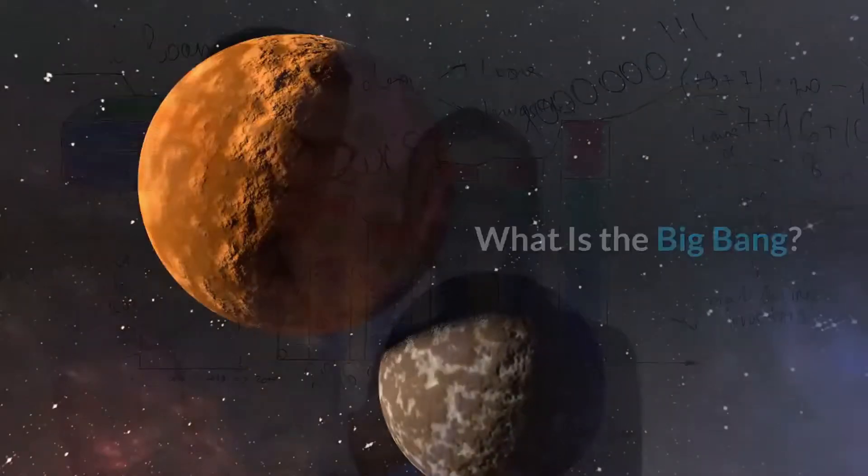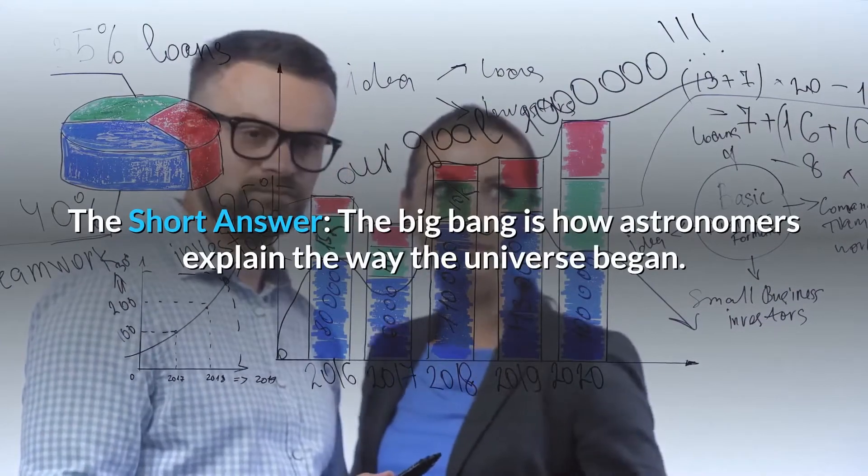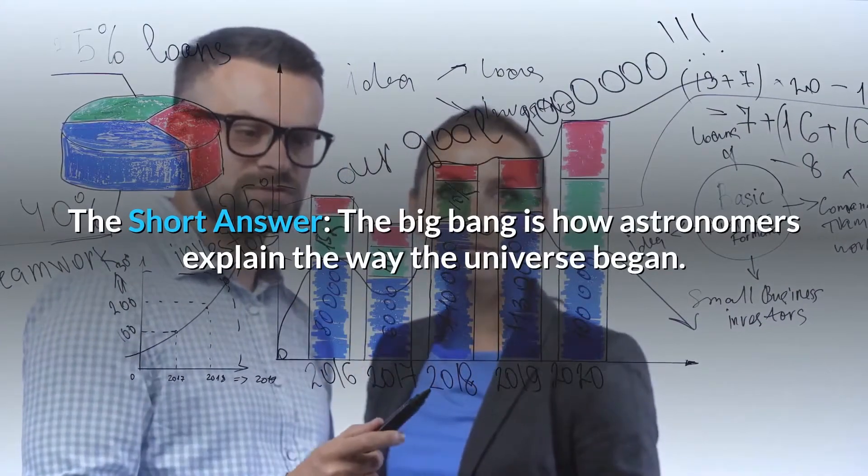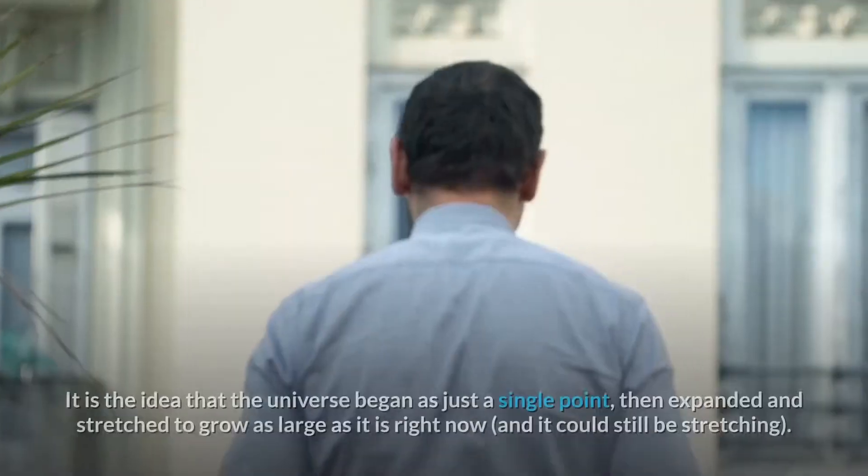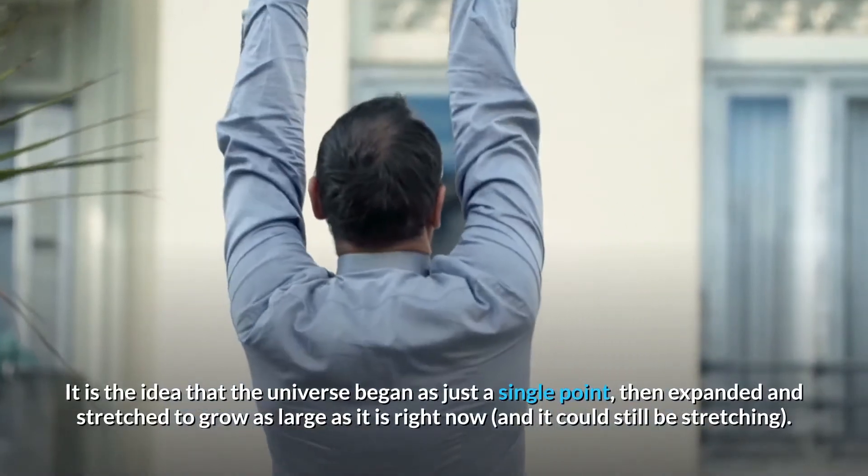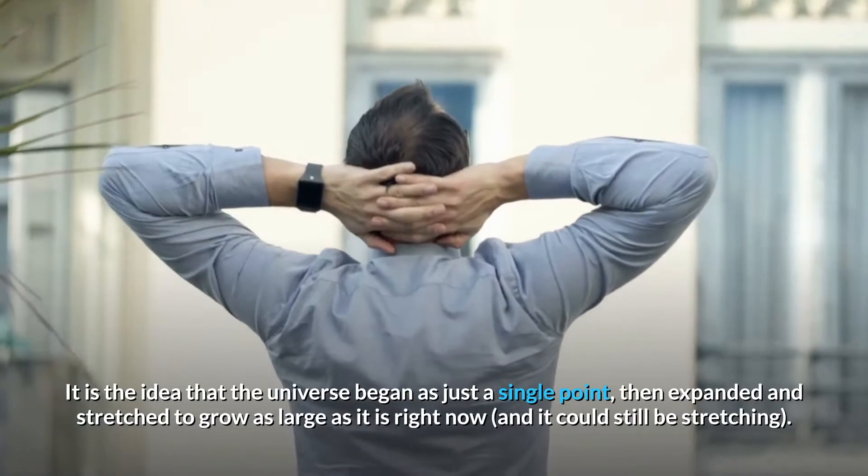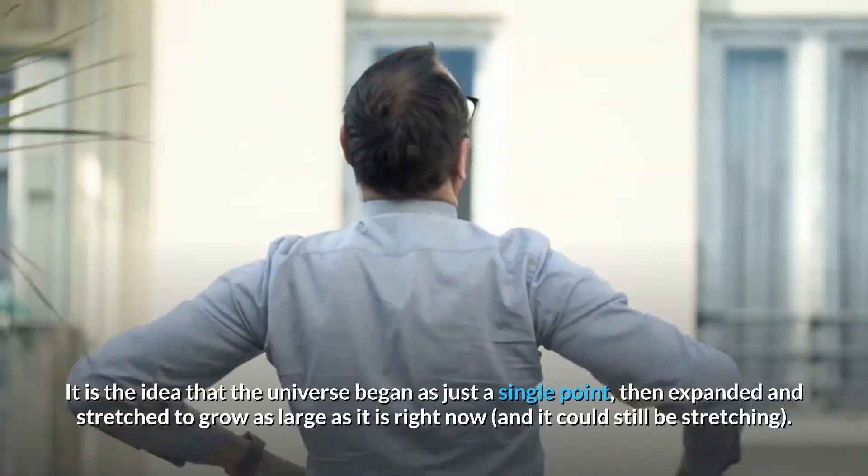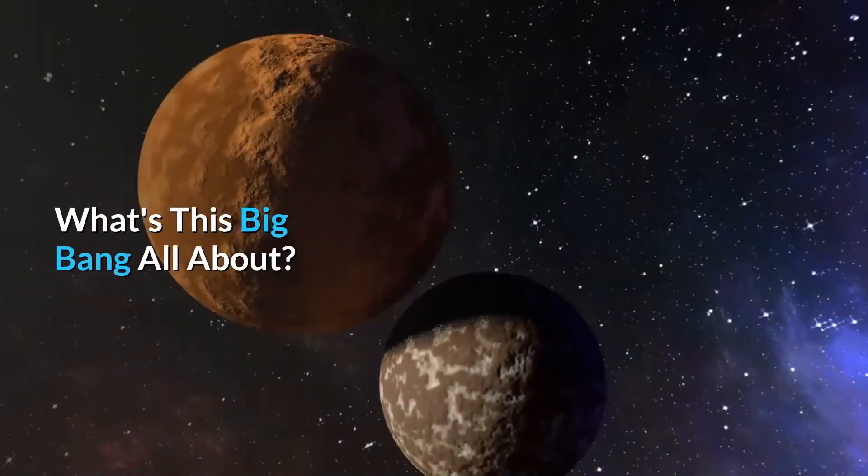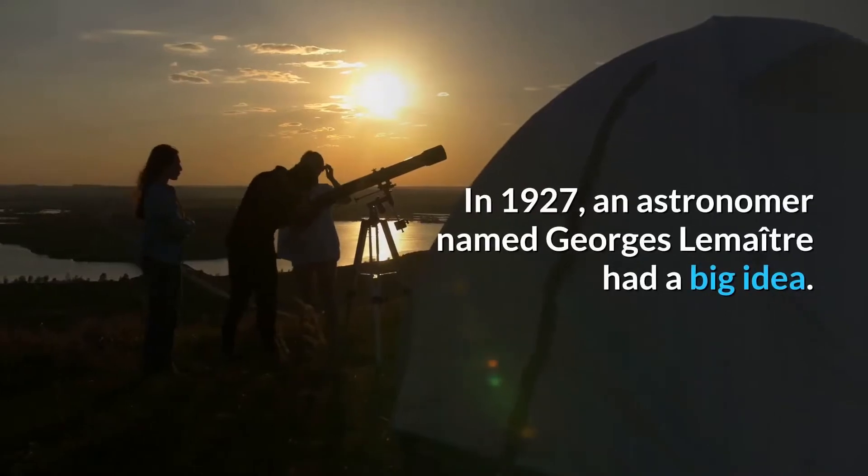What is the Big Bang? The short answer: the Big Bang is how astronomers explain the way the universe began. It is the idea that the universe began as just a single point, then expanded and stretched to grow as large as it is right now, and it could still be stretching.